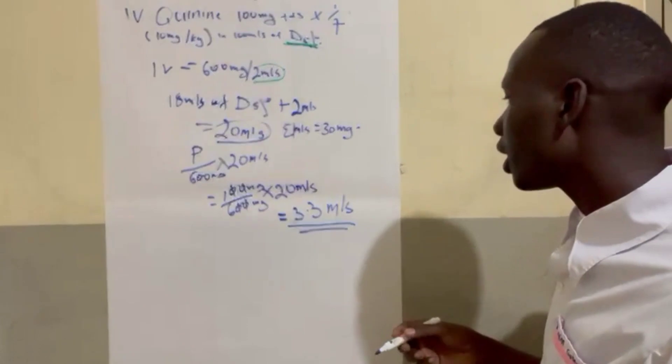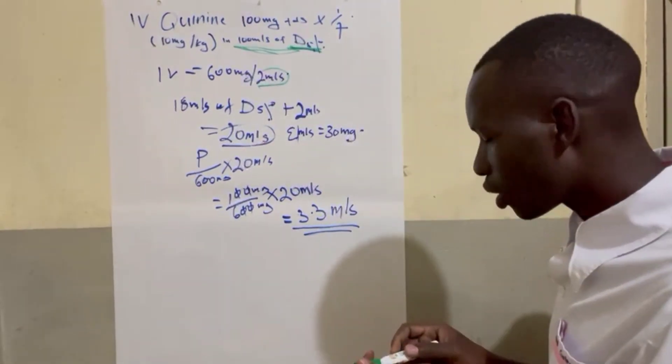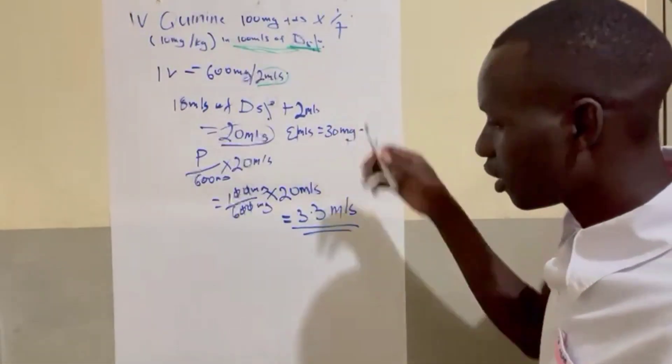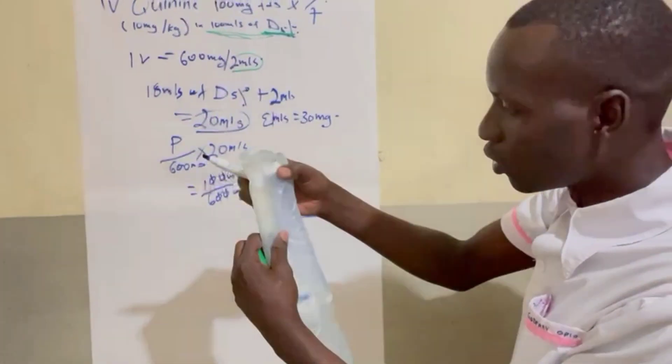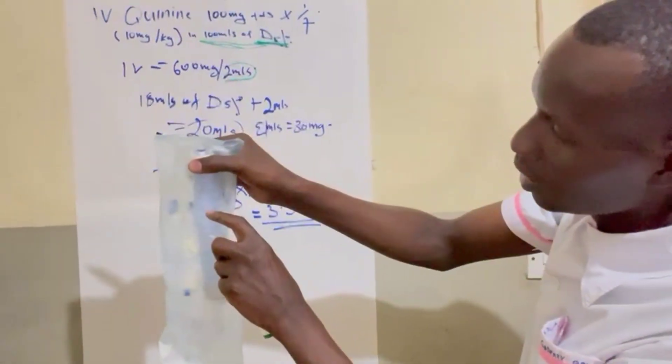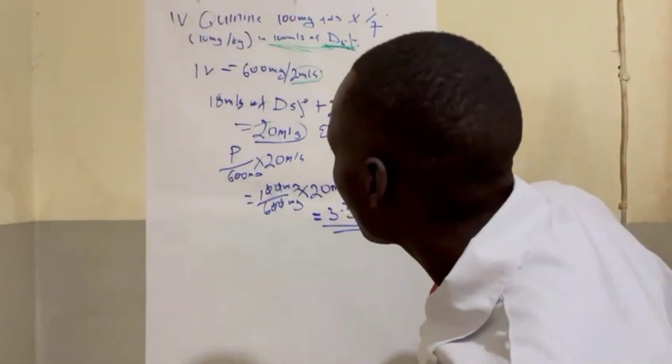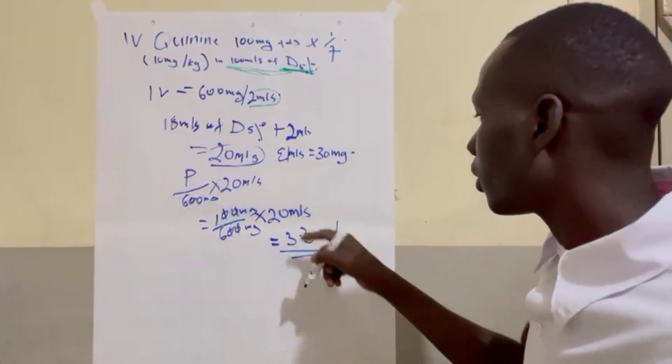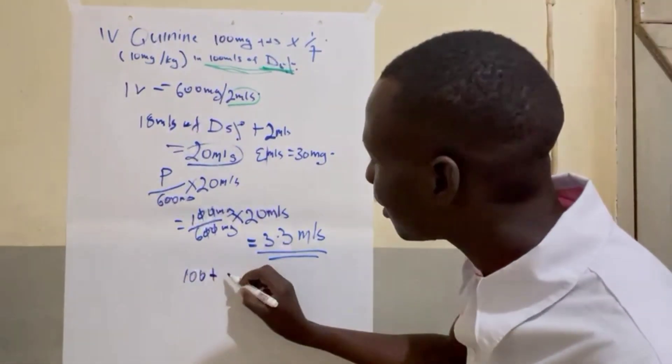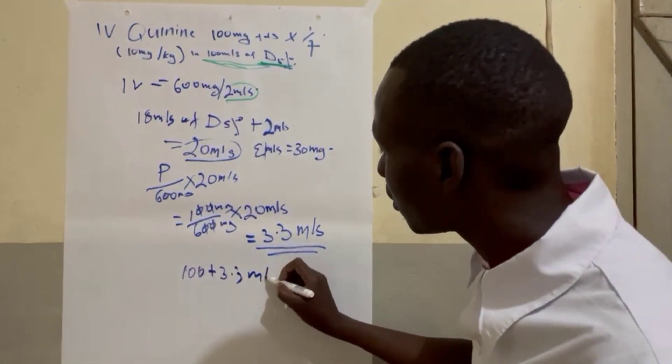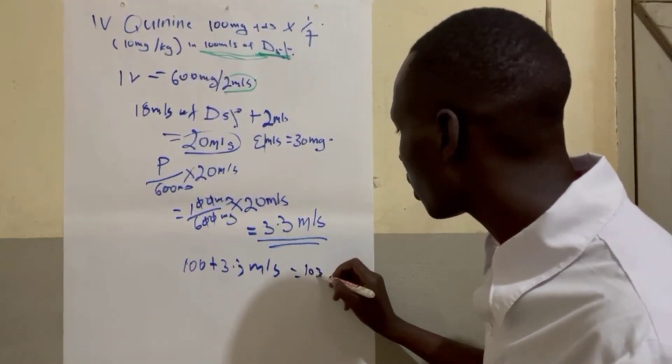Then this 3.3 we are going to put in 100ml of dextrose. Remember this one, we are going to aspirate our dextrose. Then we are going to put up to here, as you can see, up to here, 100. All this one will be dextrose 5%. And then we are going to aspirate the 3.3ml and we put in the dextrose which the total mls will be 100 plus 3.3ml. So the total thing will be 103.3ml.